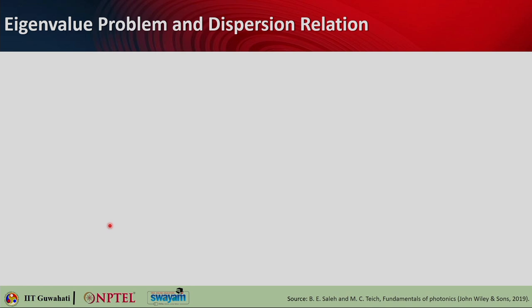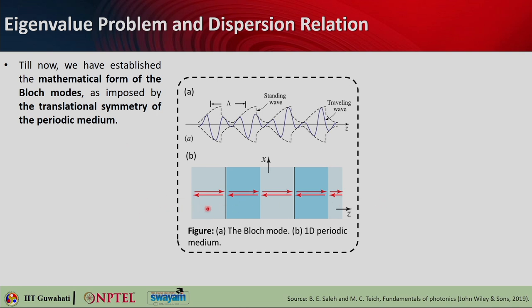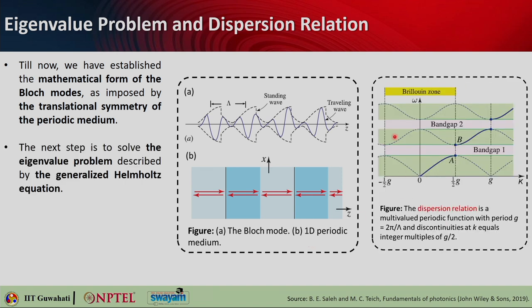Eigenvalue problem and dispersion relation. If you remember from the previous lecture, till now we have established the mathematical form of the block modes as imposed by the translational symmetry of the periodic medium. We were considering a periodic medium where the refractive index periodically alters, and these are the block modes. This is the typical 1D periodic medium we discussed. We are able to find the dispersion relation — in brief, it is basically the omega-k relation. We were also able to see that certain frequencies were not allowed to propagate, giving band gap 1, band gap 2, and so on.